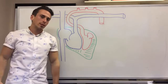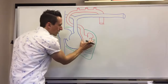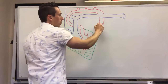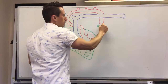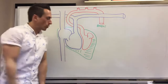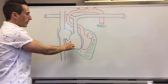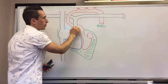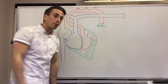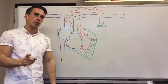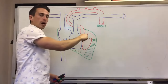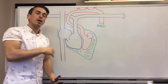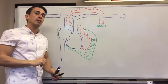Think about why that's the case: the left ventricle contracts and pushes blood up into the aorta to go to the whole body — it needs to be under high pressure. The right ventricle pushes blood through the pulmonary artery to the lungs — not very far away — so it's not a high-pressure system. The left hand side of the heart is a high-pressure system; the right hand side is a low-pressure system.